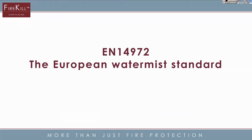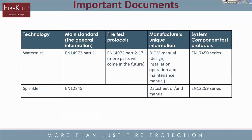EN 14972 is the upcoming European Watermist standard. We basically have some documents we have to relate to here. For sprinklers, you have the sprinkler bible, EN 12845, and some manufacturers' data sheets. For component testing, you have the EN 12259 series. For Watermist, it's a bit different. The main standard coming out is 14972 part one, which will basically contain how to install the system, like pumps and that sort of stuff.